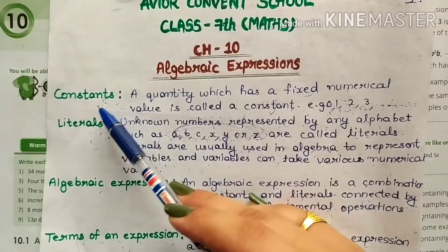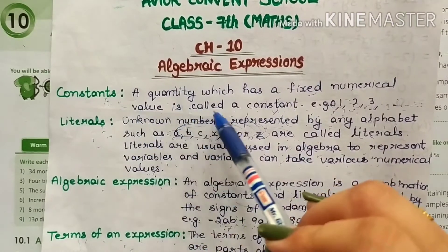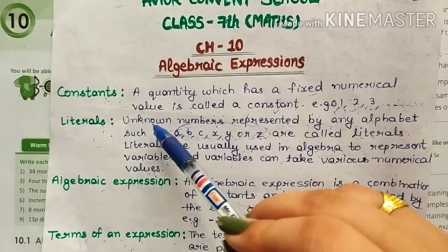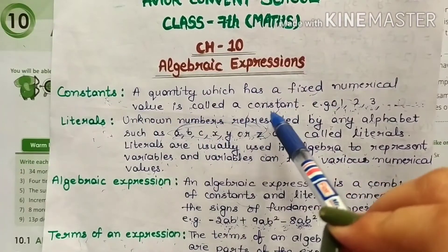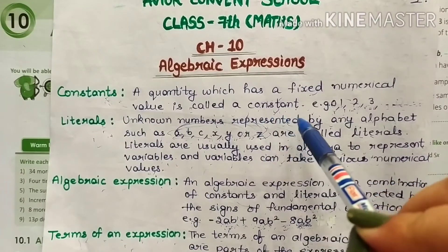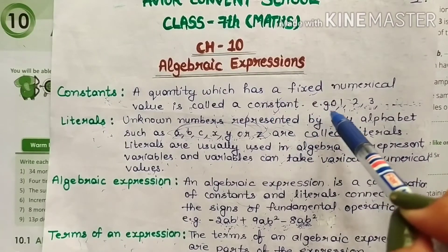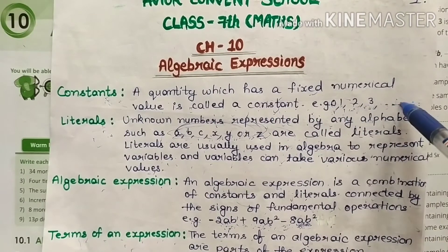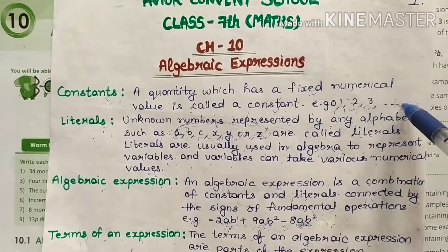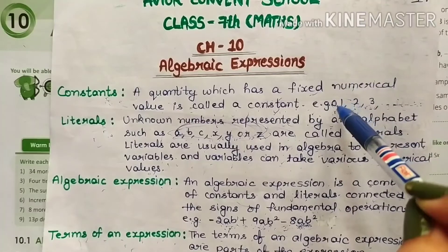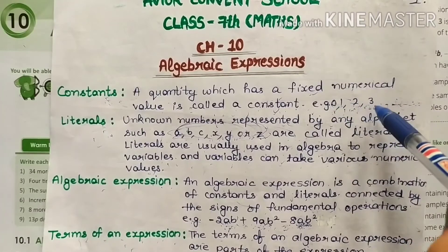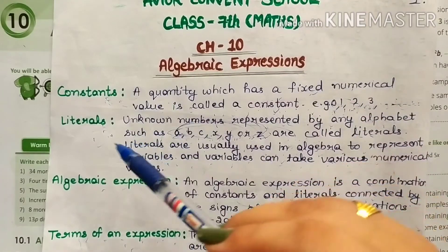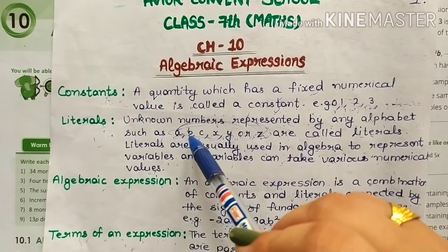First one is constants. A quantity which has a fixed numerical value is called a constant. For example, the numbers 0, 1, 2, 3, and so on are constants because these are fixed numerical values.